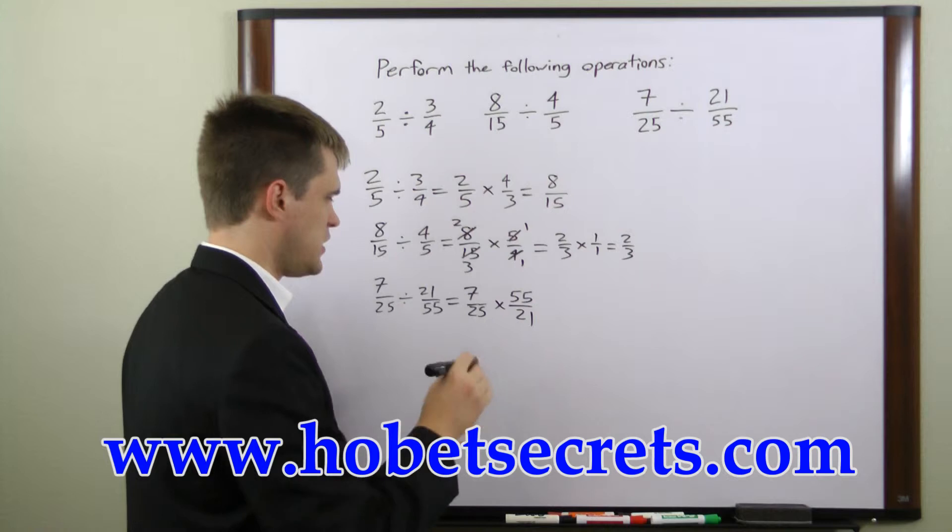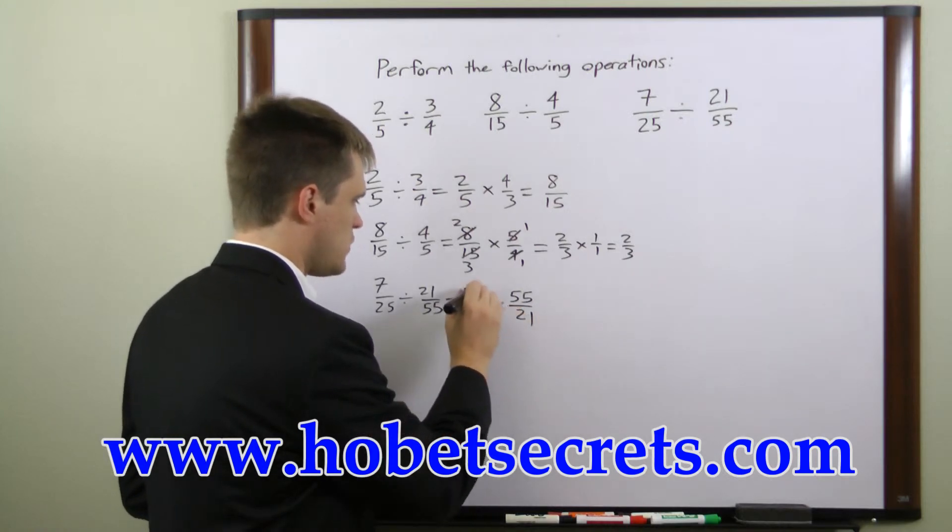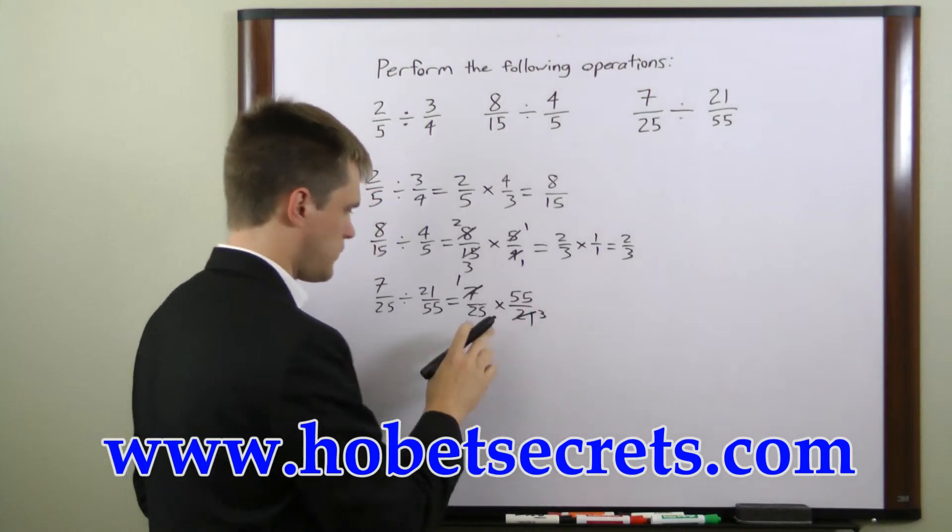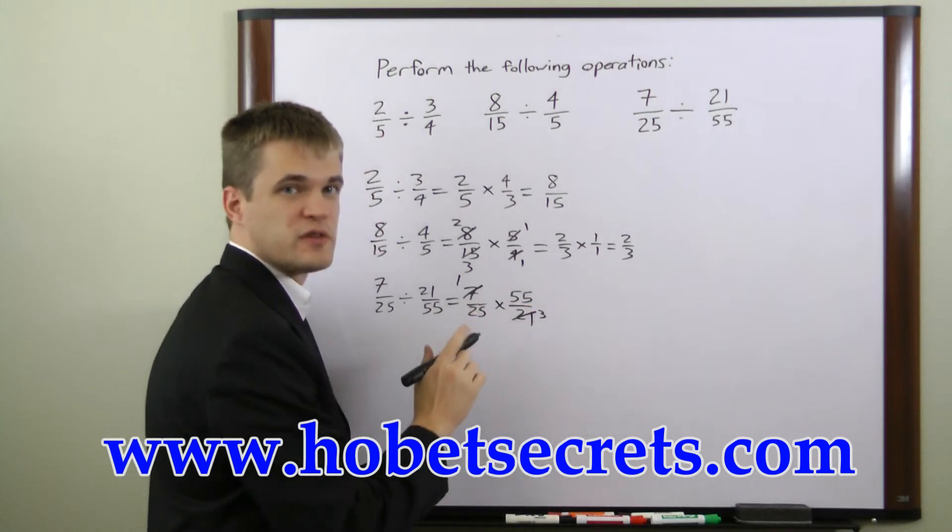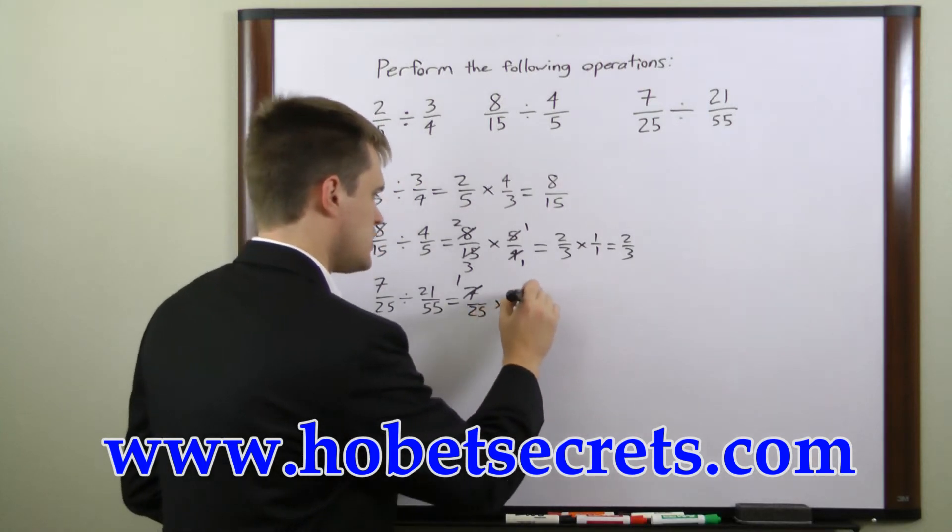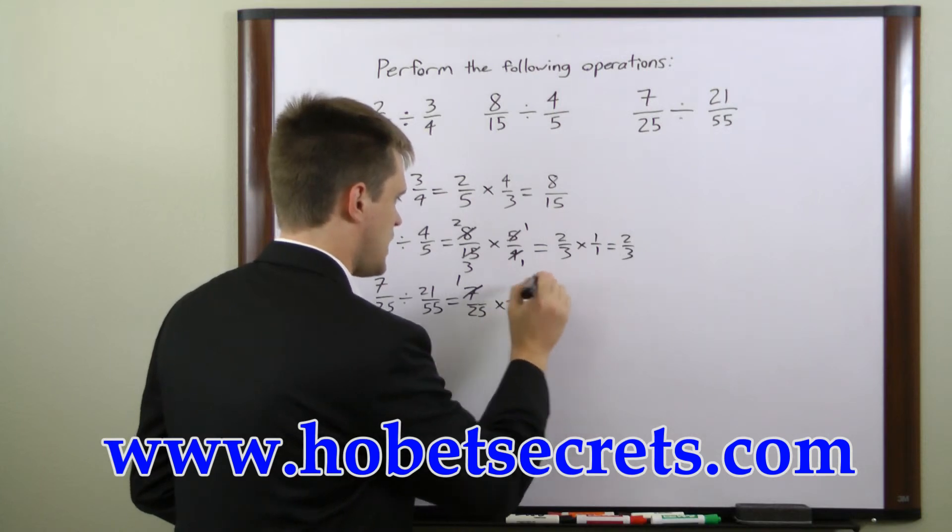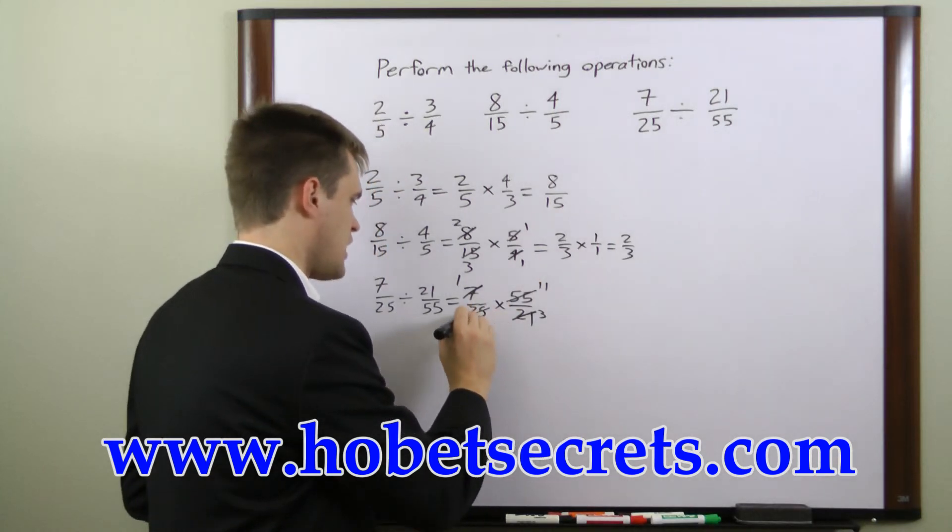And we can cancel here too. We can divide seven and twenty-one by seven. This reduces to a one. This reduces to a three. These two numbers are both divisible by five. So we can divide fifty-five by five to get eleven and twenty-five by five to get five.